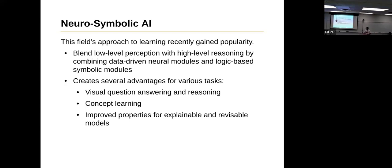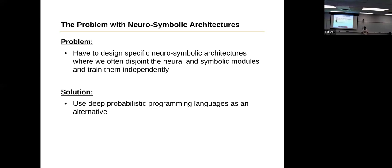As you guys already know, neural-symbolic architectures are getting a lot of popularity, providing a level of perception and reasoning by combining different neural modules. These advantages include visual question answering, reasoning, concept learning, and improved properties for explainable and advisable models. Although these architectures are really good, there's an issue with them. The problem is that we have to design specific neural-symbolic architectures where we often have disjointed neural and symbolic pipelines. So you might be thinking, how do we fix that?